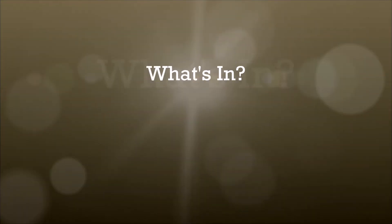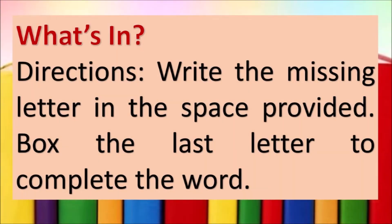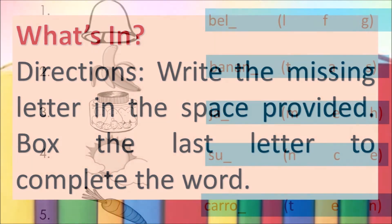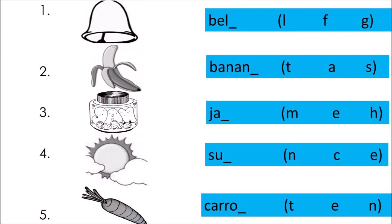What's in? Directions: write the missing letter in the space provided and box the last letter to complete the word. Number one — the picture is bell. What is the missing letter? Is it L, F, or G? Number two — the picture is banana. What is the missing last letter? Is it letter T, A, or S?